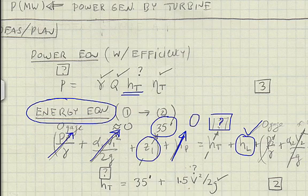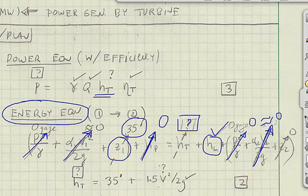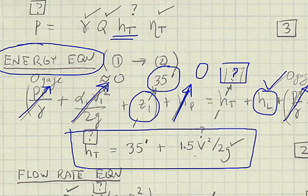There's no pumps in the system, so this term drops out. And similarly, along the tailwater, this term is zero gauge. This term is approximately zero. And this is my datum, so this term is zero. So the reduced form of the energy equation is right here. And there's the goal, head of the turbine.